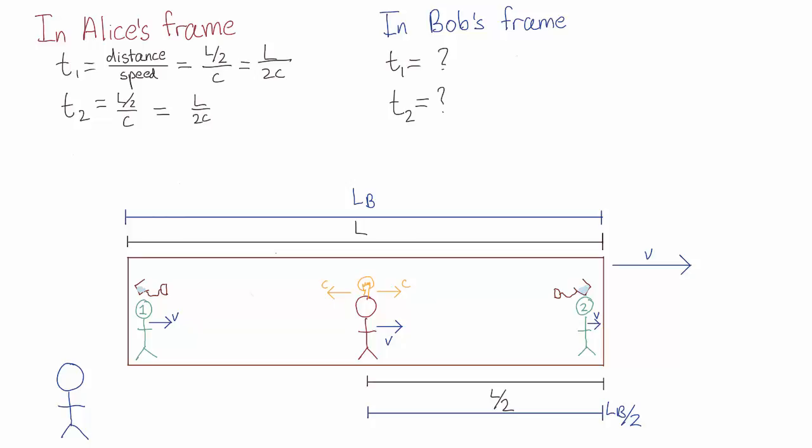So in this case, to calculate t1, Alice and the friend are initially separated by a distance Lv over 2, and the light and the friend approach each other at a speed c plus v.